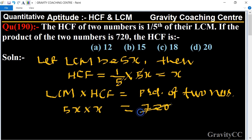So 720 is cancelled by 5, giving 144. So x squared equals